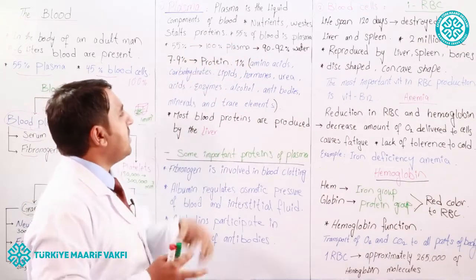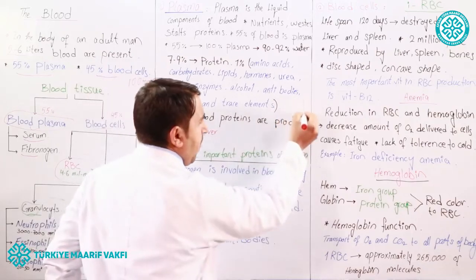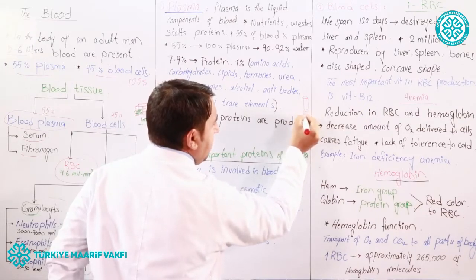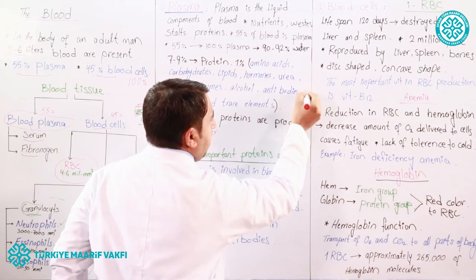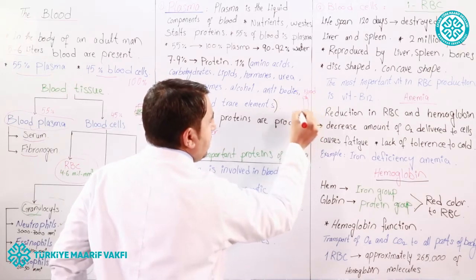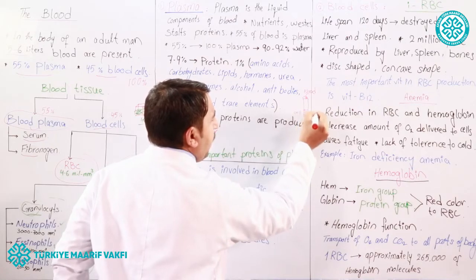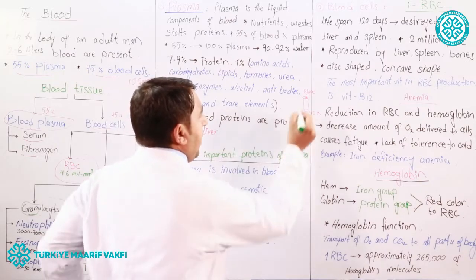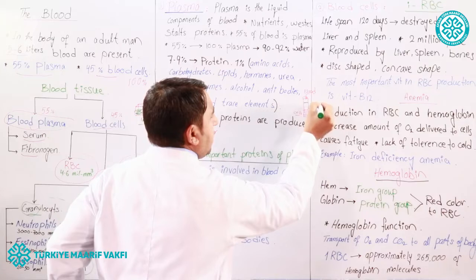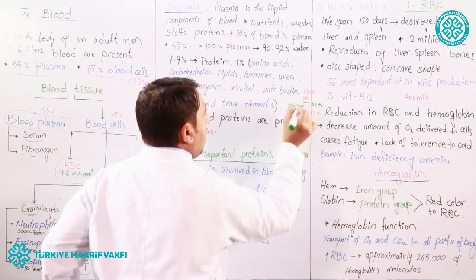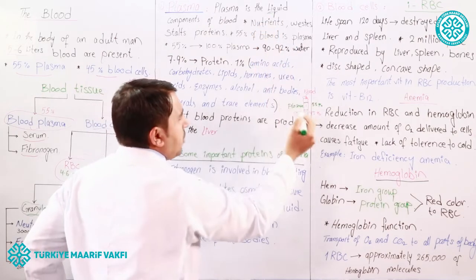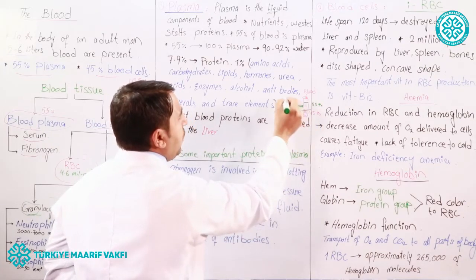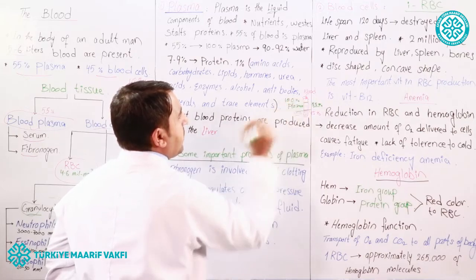For example, if we have a tube and put blood in it, the bottom part consists of 45 percent blood cells, and the upper part is 55 percent plasma — the liquid part of the blood. If we take this plasma and separate it from the cells, we can examine its percentage composition.